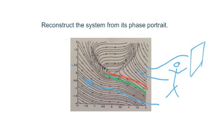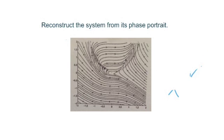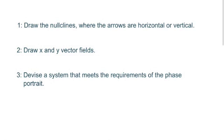But let's get down to business here and figure out what the system of equations is for this. So number one, you want to draw the nullclines or where the arrows are horizontal or vertical.